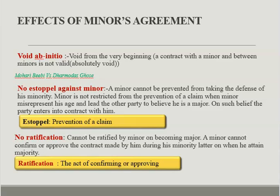The next point is no ratification. Ratification means the act of confirming or approving. A contract made during minority cannot be ratified by the minor on becoming a major. A person cannot confirm or approve the contract made by him during his minority later on when he attains majority. That means there is no ratification.